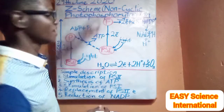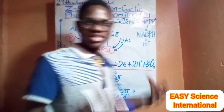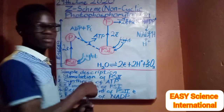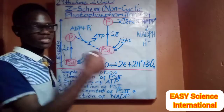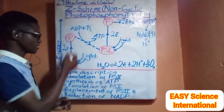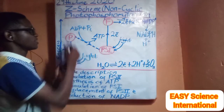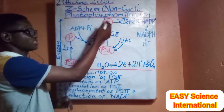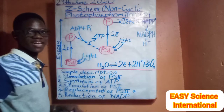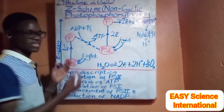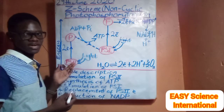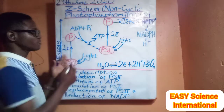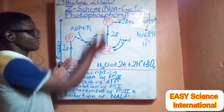That is why this process is called non-cyclic — we don't see a cyclic path of these electrons. By the time they leave Photosystem 2, they continue through the electron transport path until they reach Ferredoxin and cannot be replaced back. So the electron moves in a Z-form.